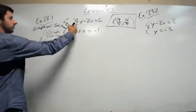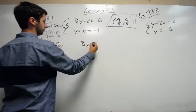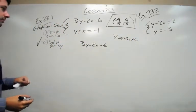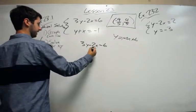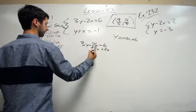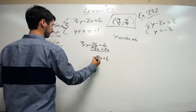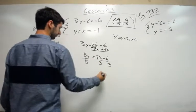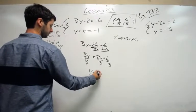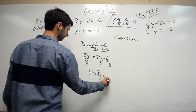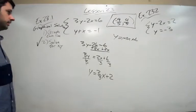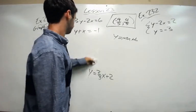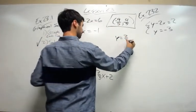So we have 3y minus 2x equals 6. We have to get everything in y equals mx plus b form. That's how we graph. So if we're trying to get y by itself, we're going to add 2x both sides. We get 2x plus 6 equals 3y. Divide by 3 to get y by itself. y equals 2 thirds x, 6 over 3 is 2, plus 2. So there's one equation. y equals 2 thirds x plus 2.